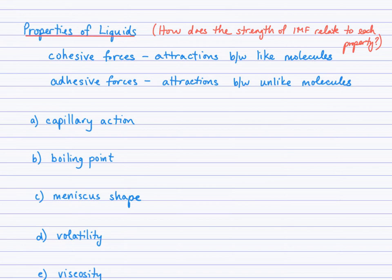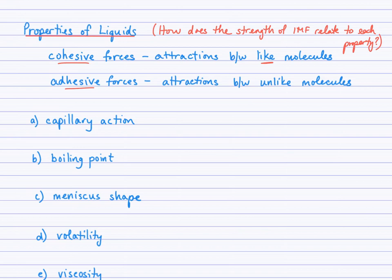Now that we've covered bond polarity, molecular shape, molecular polarity, and intermolecular forces, we can answer complex questions about properties of liquids. Two terms are introduced: cohesive and adhesive forces. Cohesive forces occur between like molecules — water to water, for example, specifically hydrogen bonding. Methane and adjacent methane experience London forces — a cohesive force, a very weak one. Adhesive forces are attractions between unlike molecules; between methanol and water, hydrogen bonding is the adhesive force.